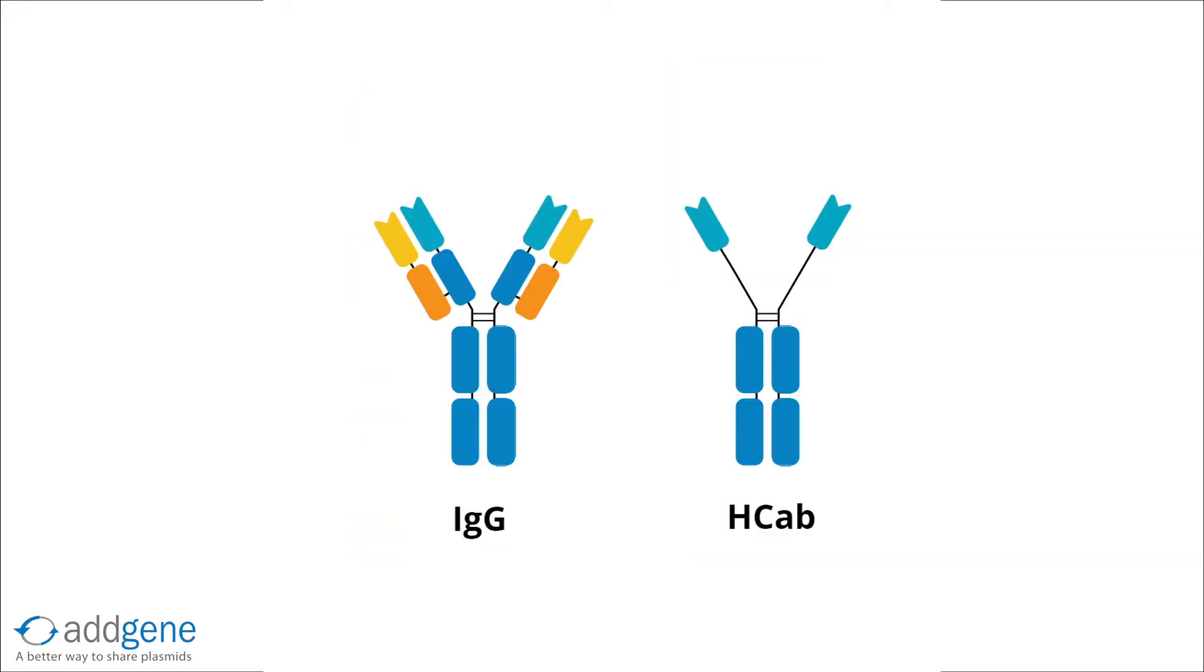HCABs are similar to IgG antibodies, but they do not have light chain domains and also have one less heavy chain domain. This leaves the job of antigen recognition to the heavy chain variable domain of the HCAB. When a heavy chain variable domain is expressed by itself, it's called a nanobody.